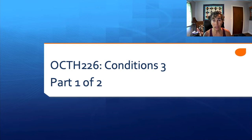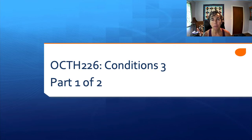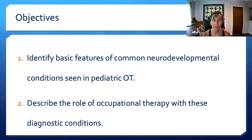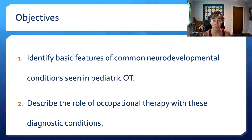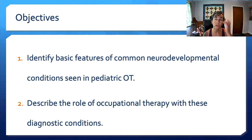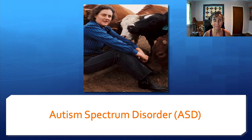This video lecture has two parts. We're in the third of three conditions lectures, and we're in part one of two of this lecture. We have a couple of objectives. First is to identify the common features in common neurodevelopmental conditions that are seen in pediatric OT. And the second is to describe the role of OT with these diagnostic conditions.